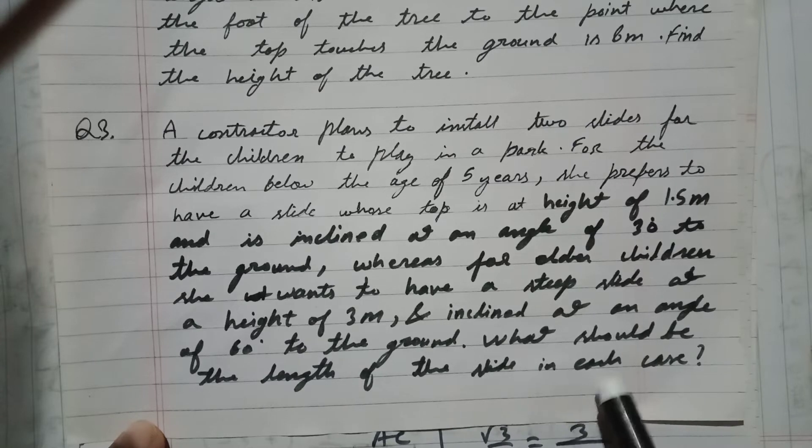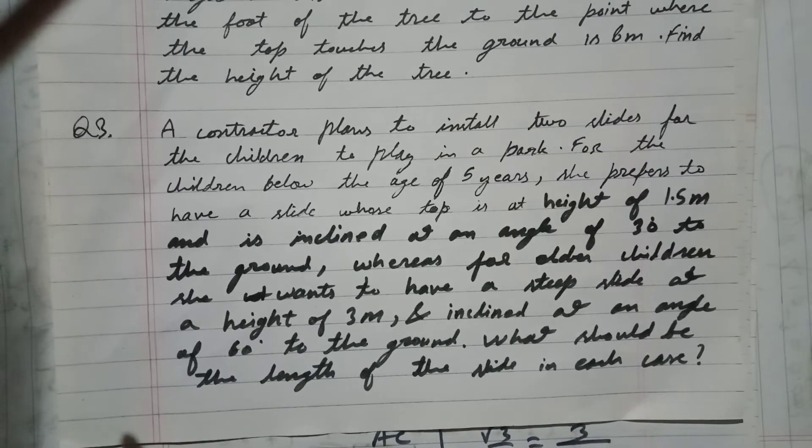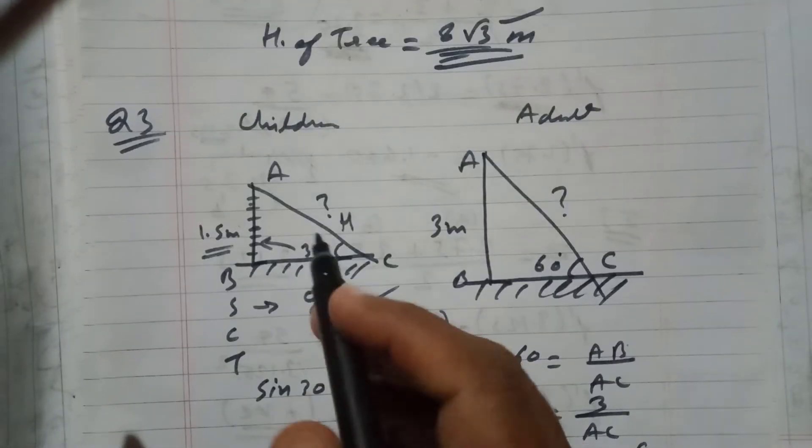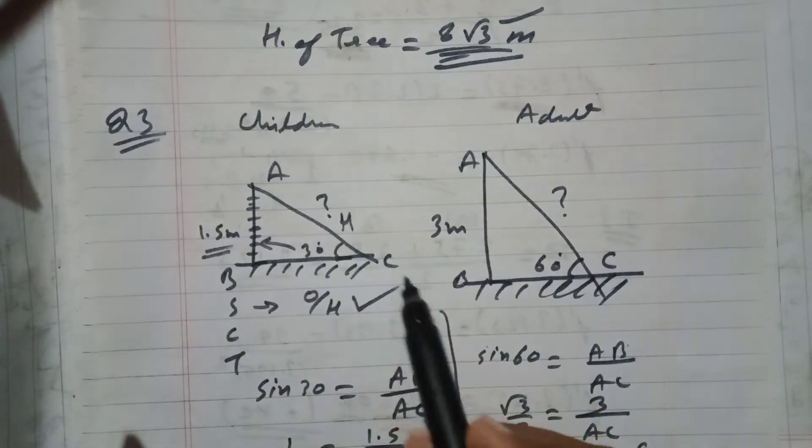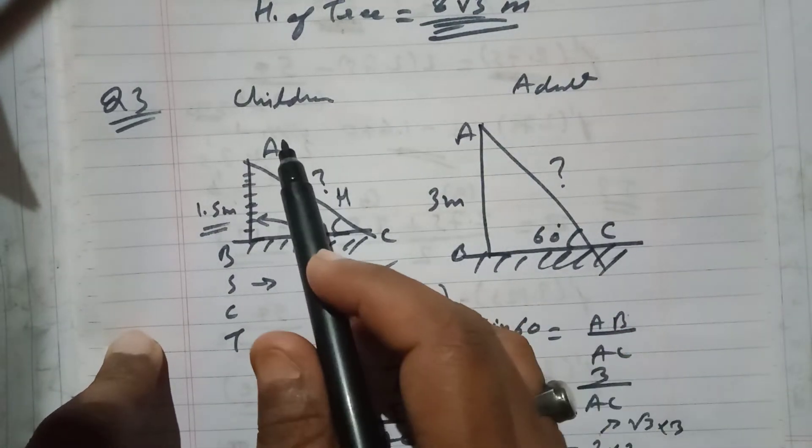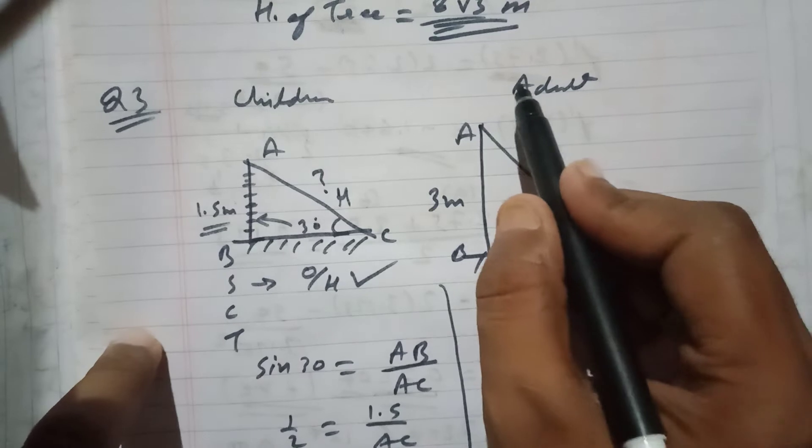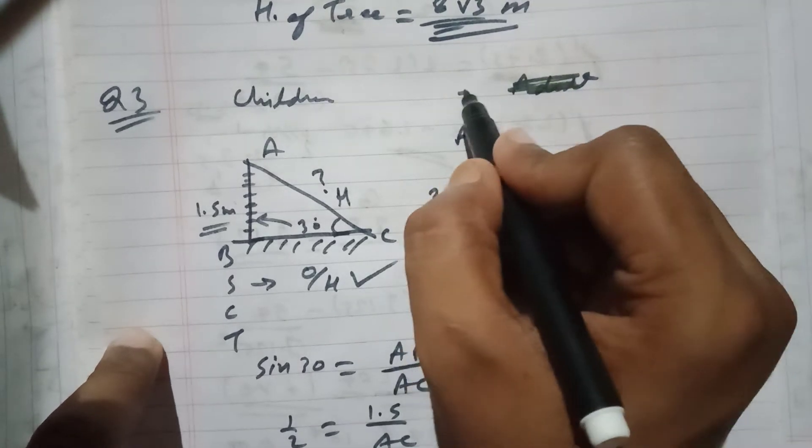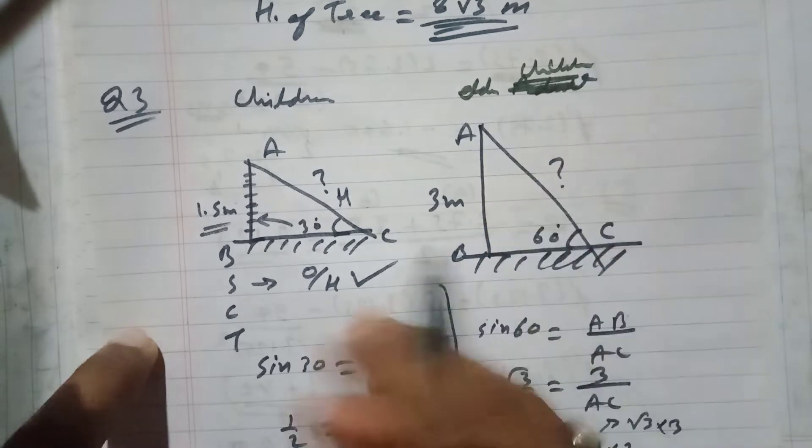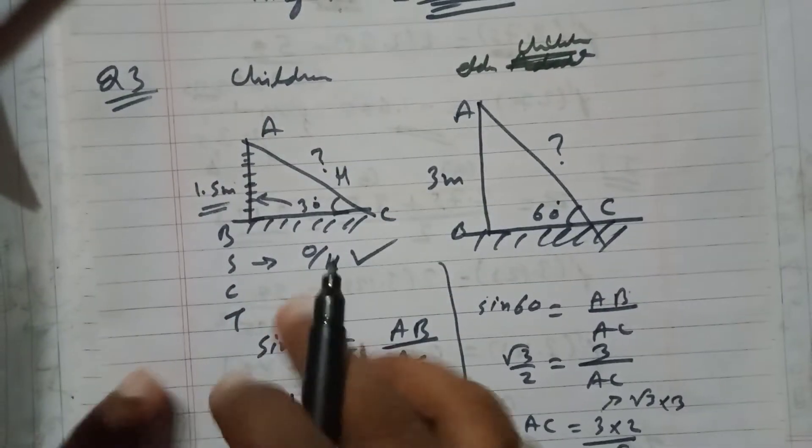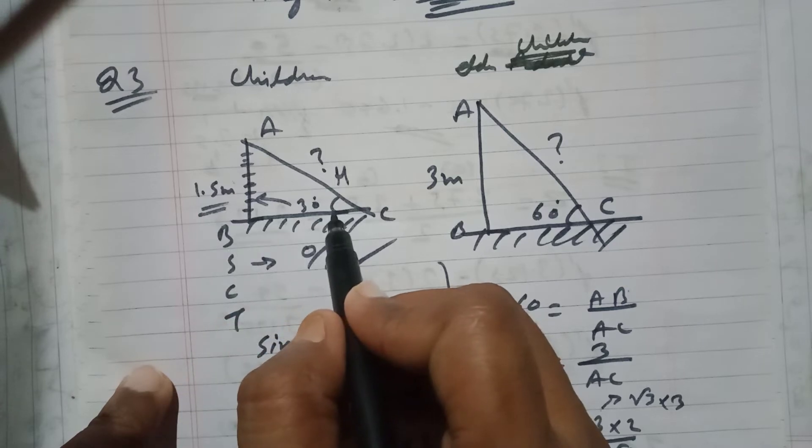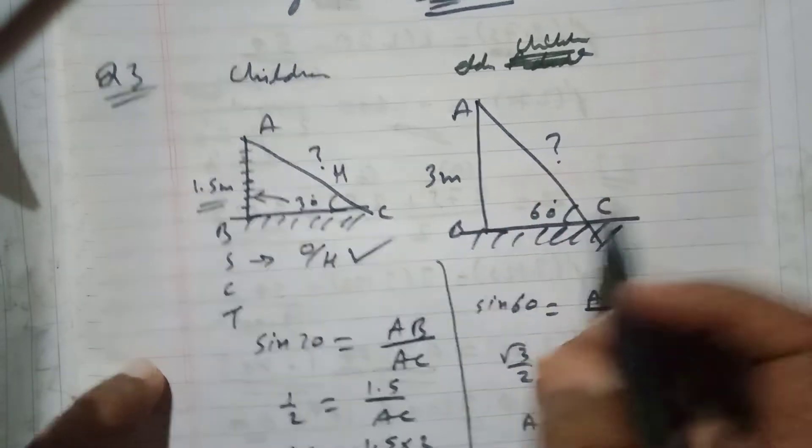What should be the length of the slide in each case? This is your question. So here is the solution. The contractor wants to have two different kinds of slides - one for children and one for elder children. For smaller children, the height is 1.5 meters and angle is 30 degrees. For elder children, the height is 3 meters and angle is 60 degrees.